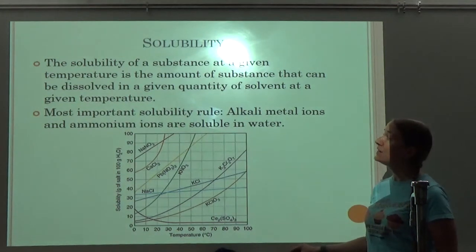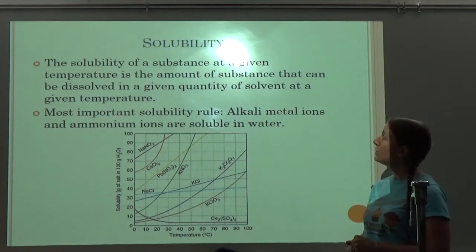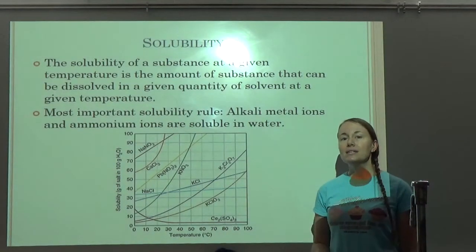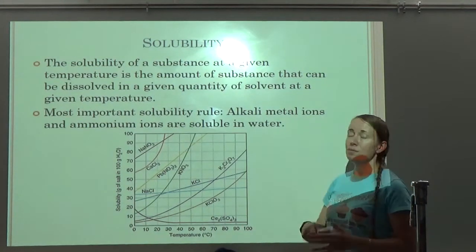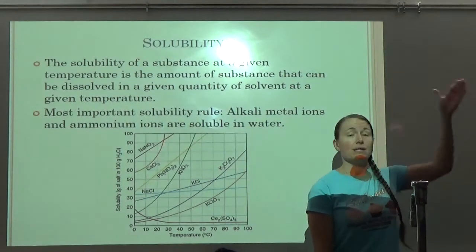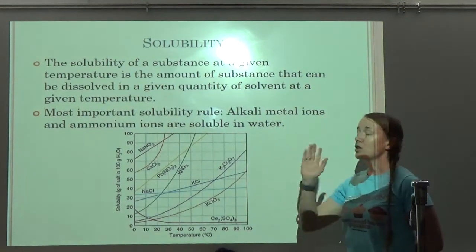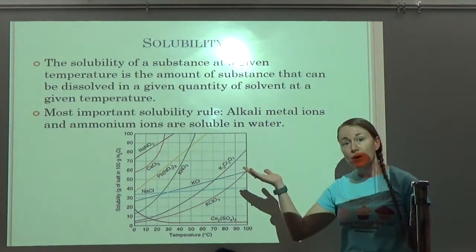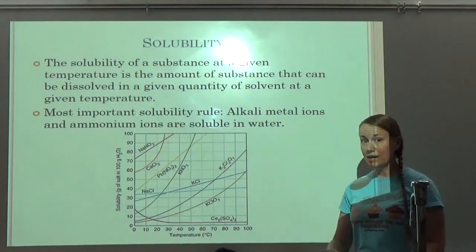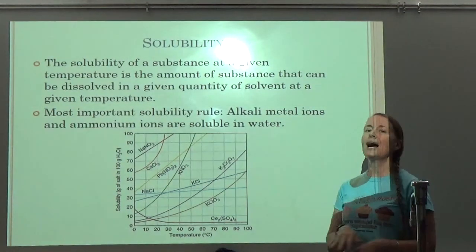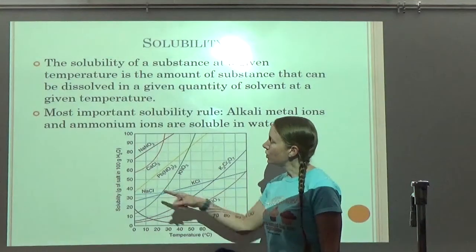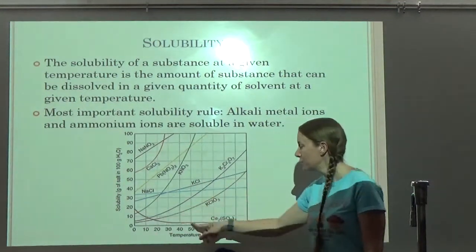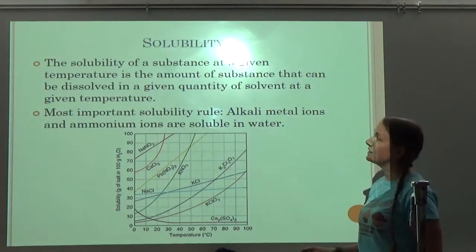The solubility of a substance at a given temperature is the amount of substance that can be dissolved in a given quantity of solvent at that temperature. The most important solubility rules: alkali metal ions and ammonium ions are soluble in water — your Group 1 metals like lithium, sodium, potassium, and ammonium ions are soluble. Another important one is nitrate ions are soluble. If you remember those two, you're probably in good shape. In general, solubility of a solid tends to increase as temperature increases, though there are always exceptions.